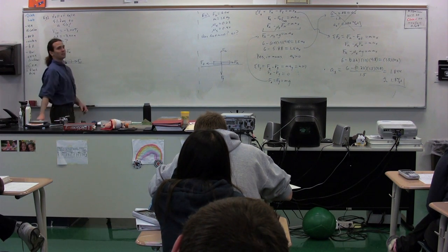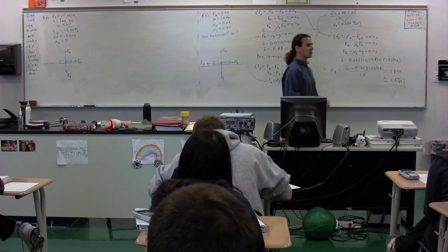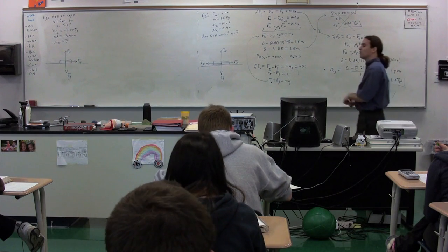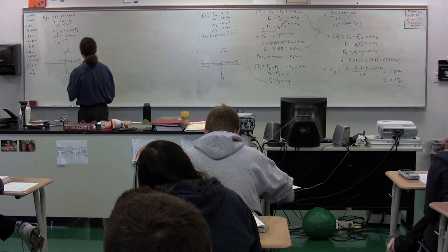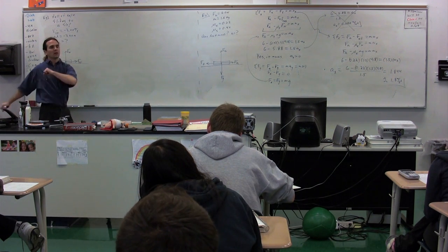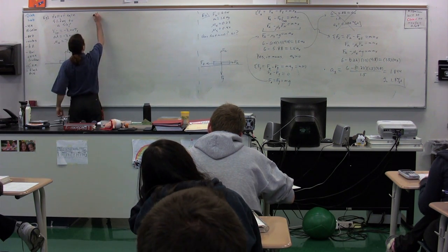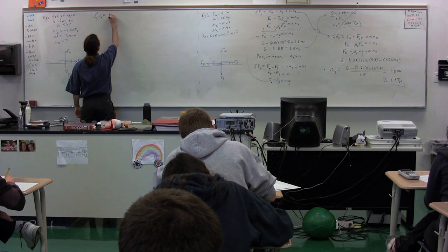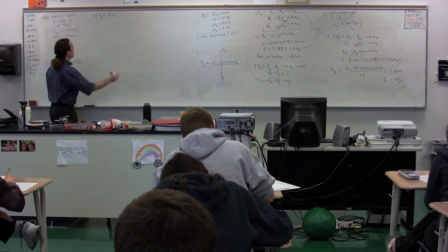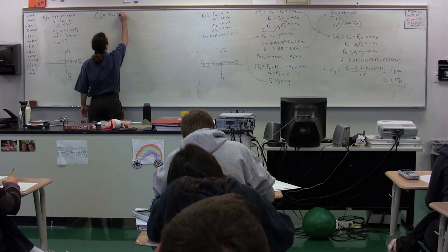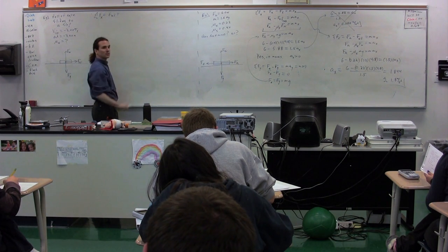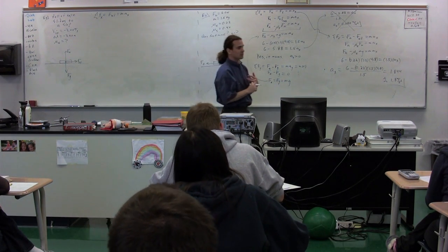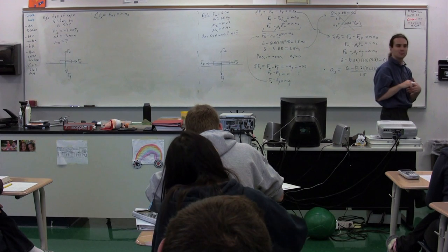We have drawn our free body diagram. We don't need to break things into components or redraw the free body diagram. The sum of the forces in the x-direction: there is just the force of kinetic friction. That's the only force, so it equals mass times acceleration in the x-direction by Newton's second law. The net force in the x-direction equals the force of kinetic friction, which equals mass times the acceleration in the x-direction.